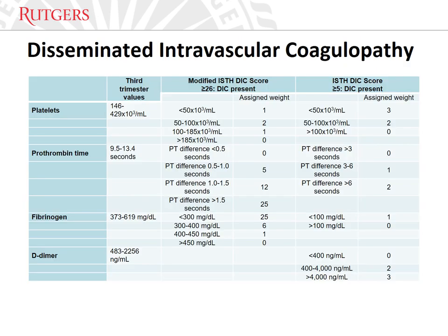Abruption is the most common cause of DIC in pregnancy. Compared to other causes of obstetrical hemorrhage, pregnant people with significant abruption experience greater decreases in platelets, require more platelet transfusions, and have more acquired hypofibrinogenemia. DIC may be suspected based on clinical presentation and laboratory findings, but no single laboratory test is sufficient to make the diagnosis. The classic findings of DIC are low platelets, prolonged PT and PTT, and low fibrinogen levels. Scoring systems such as the International Society of Thrombosis and Hemostasis DIC score, modified for pregnancy, are provided here. Although not widely used, a score of 26 or greater has a sensitivity of 88% and a specificity of 96% for the diagnosis of DIC.